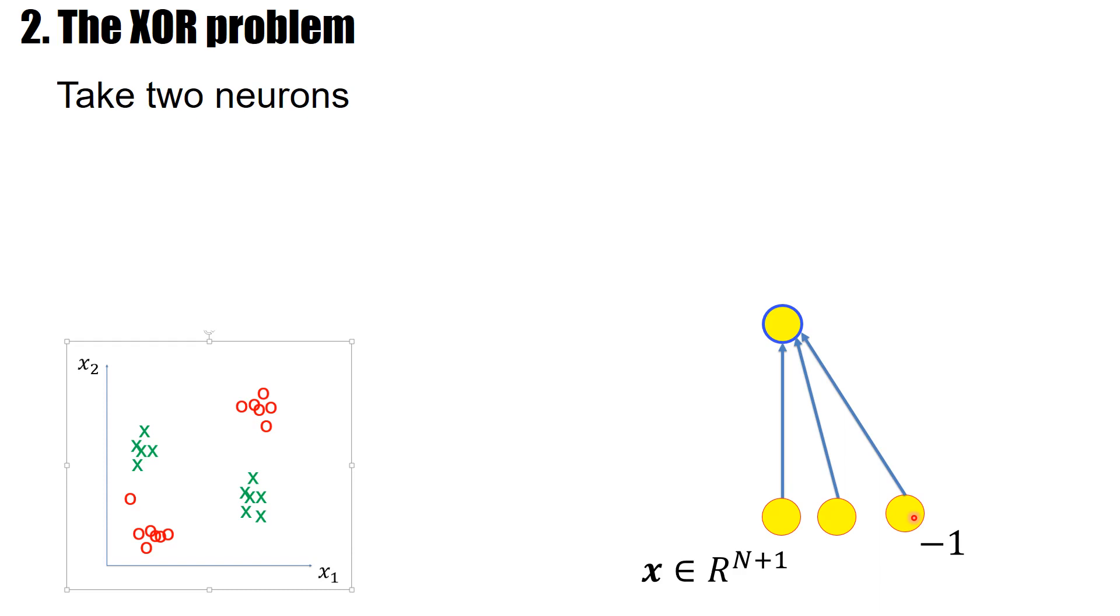Well, this neuron cannot solve the problem. What this neuron can do is to construct a hyperplane with some weight vector. And the weight vector would correspond to the set of weights that characterize the input to this neuron. So this is one neuron.